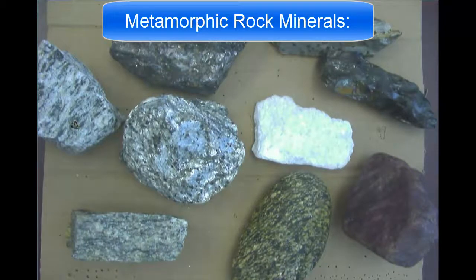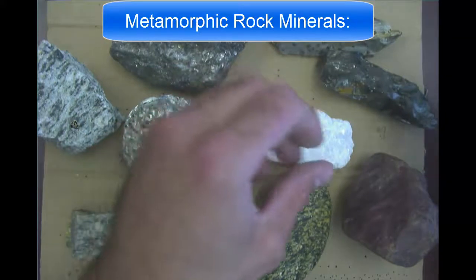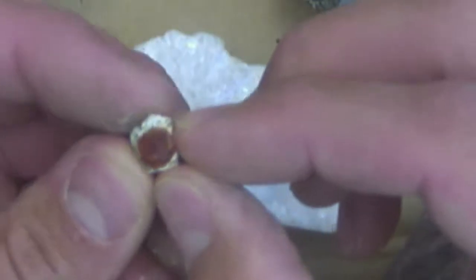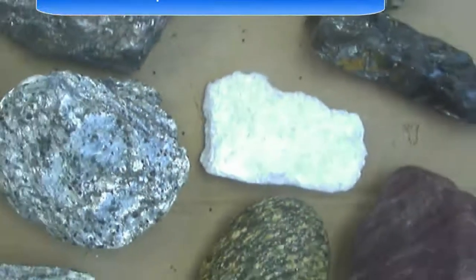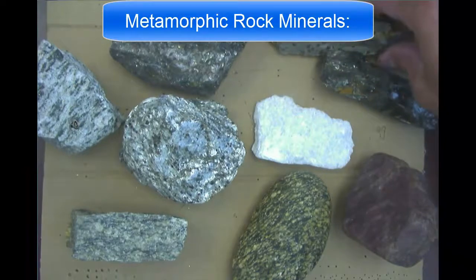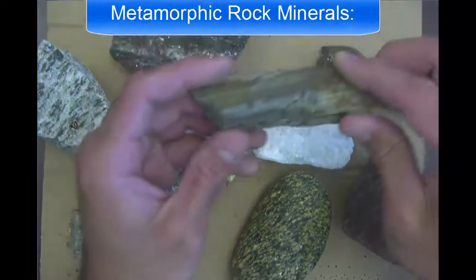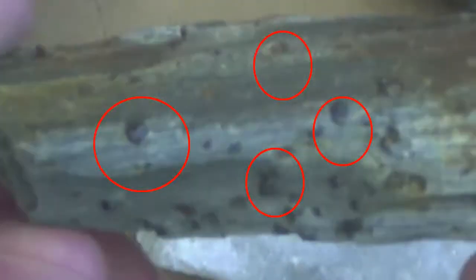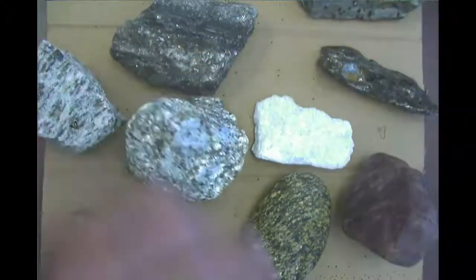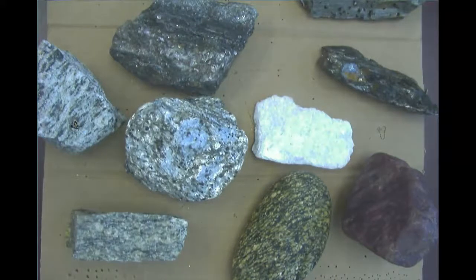One other mineral that can show up — one some of you may have as a birthstone — is garnets. Garnets are these little soccer ball-like crystals, sometimes dodecahedrons or other shapes. They show up a lot in certain metamorphic rocks and are a sure sign that you're dealing with a metamorphic rock, so that's something to be aware of.